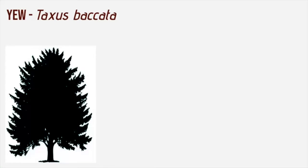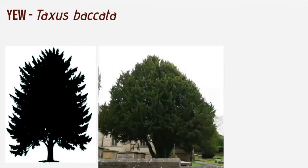The yew tree, common yew, Taxus baccata, is a conifer native to Europe — one of three native conifers in Britain, along with Scots pine and juniper. It's also common across Turkey and Iran. It grows naturally on chalk downs, limestone and in oak woods. It's a slow-growing and very long-lived tree, with some trees being over a thousand years old, commonly found next to churches and often as old as the church itself. Yew was used to make longbows in olden days, and the scientific name Taxus comes from the Greek word for bow.